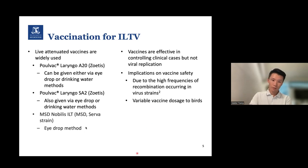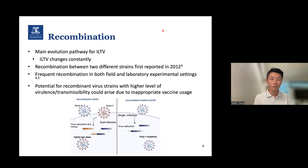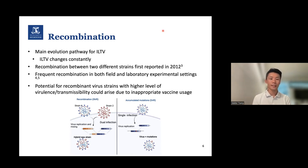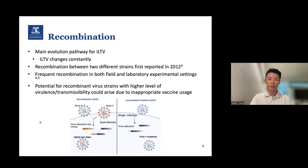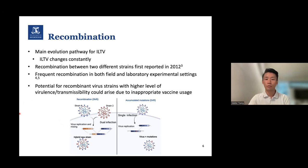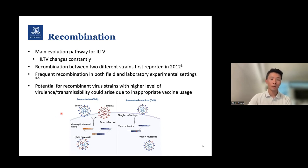Recombination is the main evolution pathway for ILTV. As a species, ILTV changes constantly. Recombination occurs between two different strains and was first reported within APCA in 2012. Since then, frequent recombination in both field and laboratory settings has been described. Recombination occurs when there's co-infection of two different strains of ILTV in one host cell, causing mixing and exchanging of viral genetic material — recombination of genome sequences — producing a hybrid new strain. There's a potential for new recombinant virus strains to have a higher level of virulence and transmissibility. Inappropriate vaccine usage can also cause recombination.